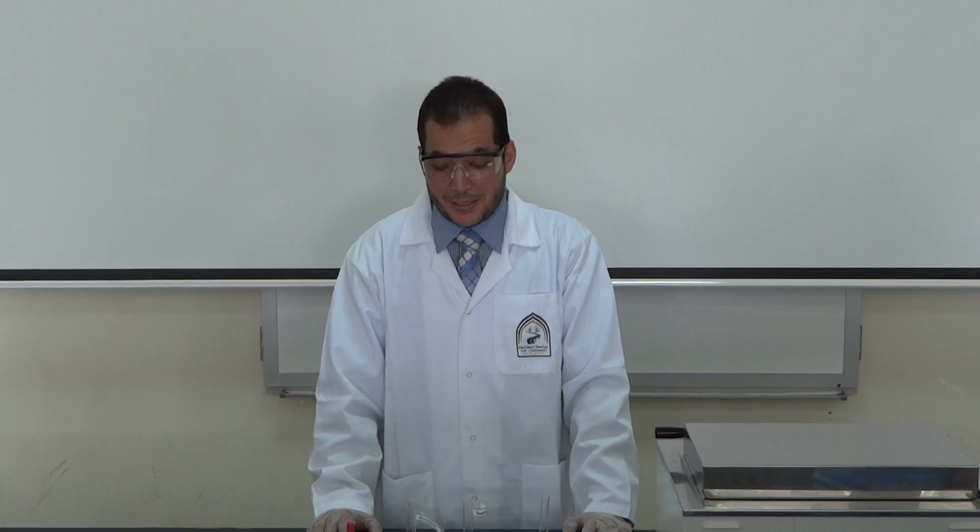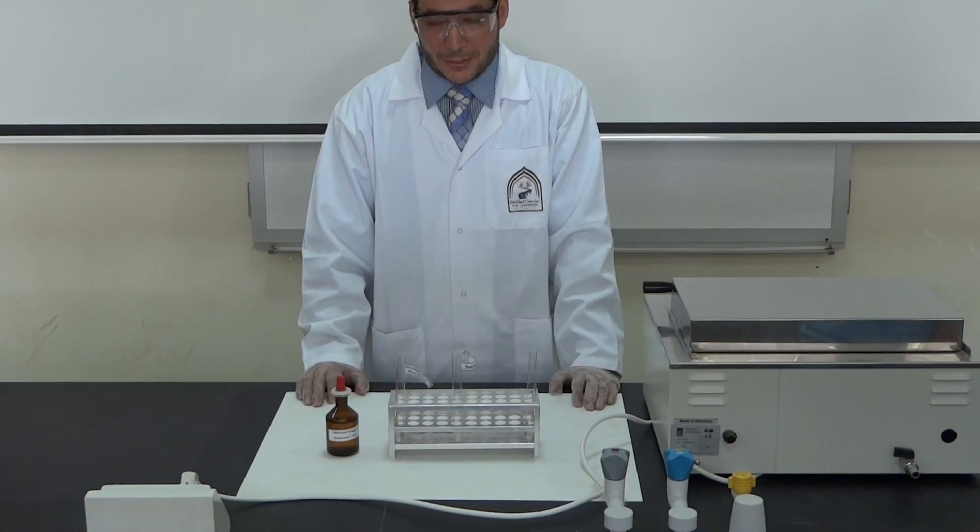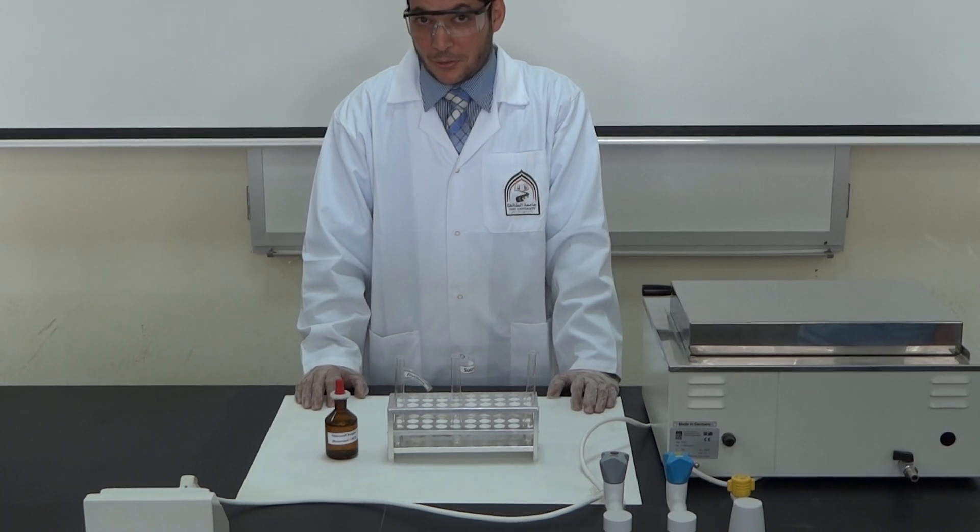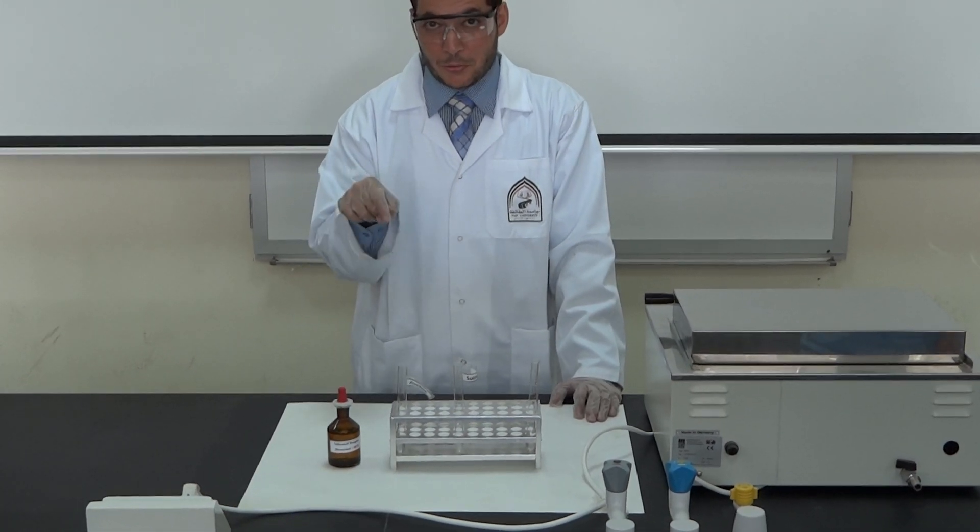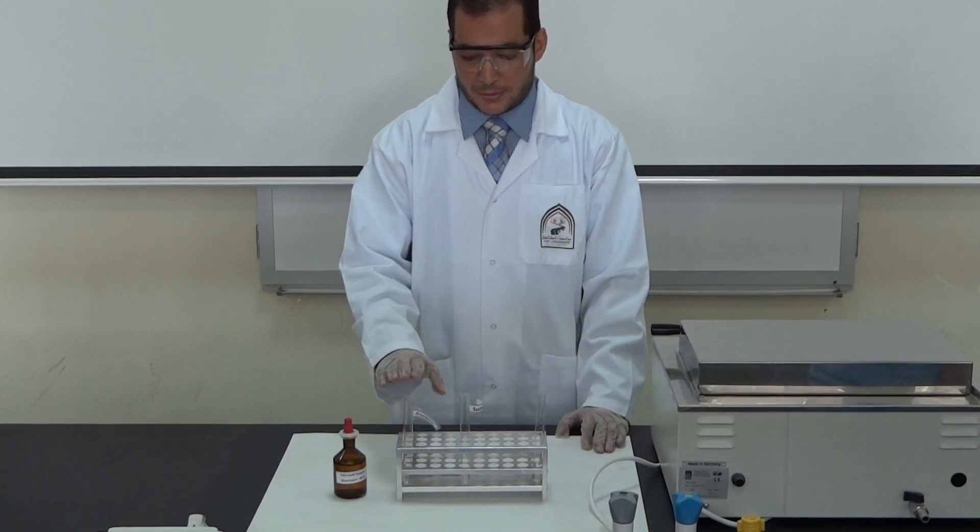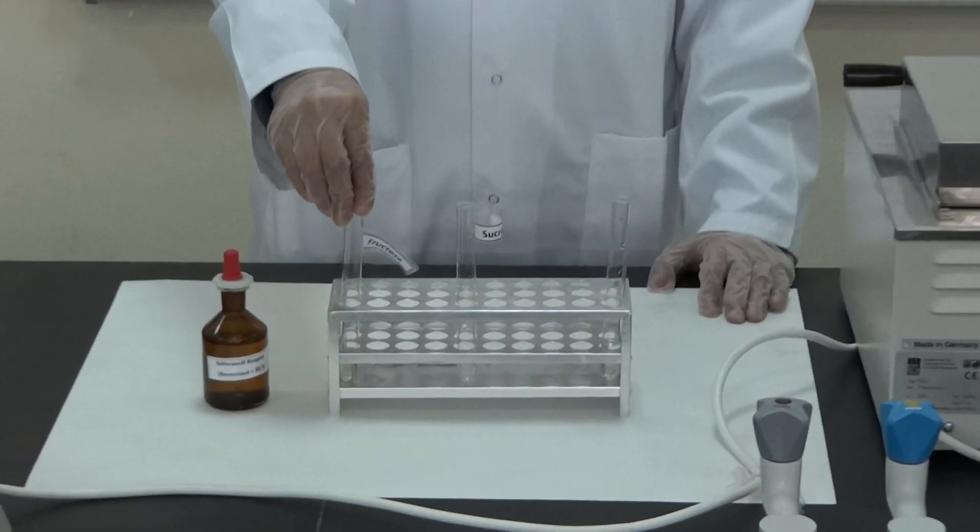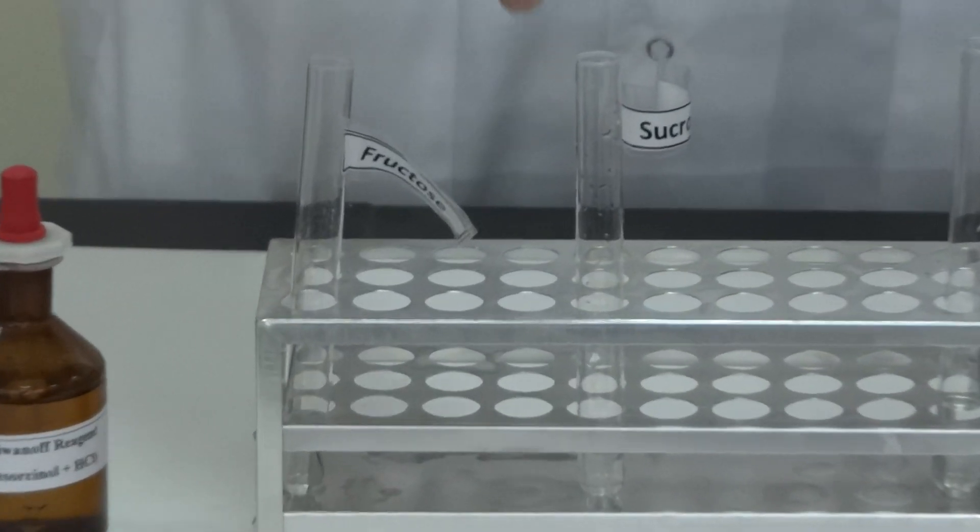Let's do Seliwanoff test. Seliwanoff test, as we said before, is specific to saccharides that contain ketonic groups, like carbonyl groups with carbon at the top and carbon at the bottom. In monosaccharides you can find it in fructose, in disaccharides you can find it in sucrose.